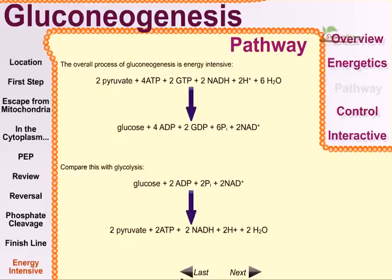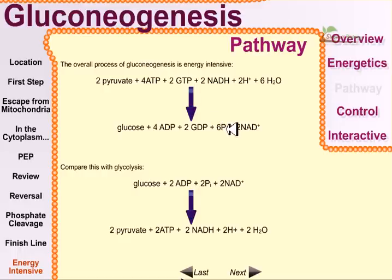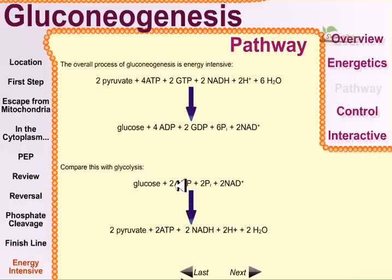The overall process of gluconeogenesis is energy intensive. Starting from two pyruvate molecules, we need four ATP, two GTP, two NADH, and six H₂O to generate one glucose molecule. The products of ATP and GTP hydrolysis are four ADP, two GDP, and six inorganic phosphate molecules, plus two NAD⁺. Importantly, the NAD⁺ generated acts as electron carriers.